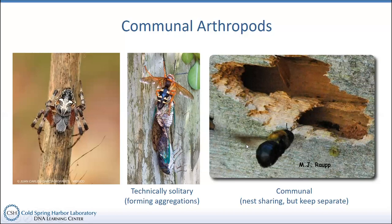A truly communal arthropod we would have in the northeast would be the carpenter bee. Believe it or not, those are the big gigantic hovering bees you'll see in summers — they actually chew little holes out of wood and dig little burrows. There are sometimes as many as four or five carpenter bees in a single nest. They might cooperate in building a burrow — one bee chews a hole and another comes in and chews another offshoot. But they kind of keep to themselves once they separate out in a burrow and really don't have much interaction. But they use the same entry and exit hole.